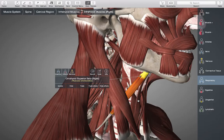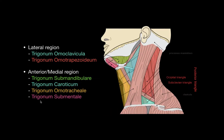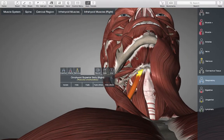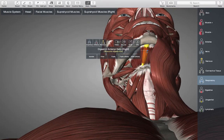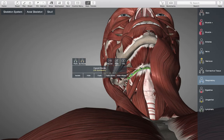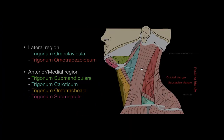Going over to the trigonum submentale, which is our last triangle, it is located under the mandible. The trigonum submentale consists of the musculus digastricus — specifically the anterior belly of musculus digastricus on both sides — and the os hyoideum. Showing it on the model: the anterior belly of musculus digastricus on both sides and the hyoid bone form our triangle. That was the topography of the neck, I hope that was helpful.